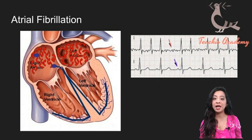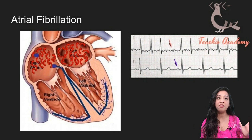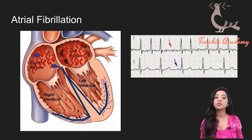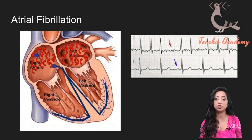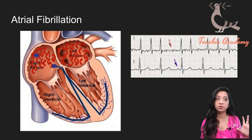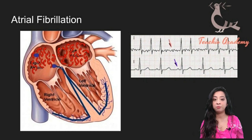Usually in sinus rhythm, you see easily identifiable atrial activity in the form of P waves. But in atrial fibrillation, both the left and right atria are having chaotic small electrical activity, so you'll see the same chaos on the ECG strip in the form of fibrillatory potentials. Remember, ECG is only an electrical representation of what's going on in the heart. Because the P wave is lost, we see these chaotic atrial fibrillation waves.